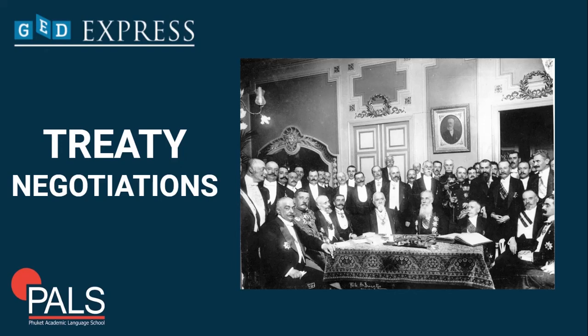The Allied nations met in Paris at the Paris Peace Conference in 1919 to decide the fate of Germany and the Central Powers. Although a number of nations took part, the major decisions were made by the leaders of the Big Four nations: Georges Clemenceau, Prime Minister of France; David Lloyd George, Prime Minister of Great Britain; Woodrow Wilson, President of the United States; and Vittorio Orlando, Prime Minister of Italy. Each of the four nations had different opinions on how Germany should be treated.